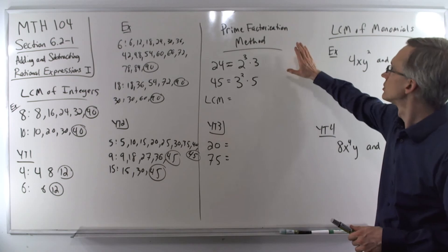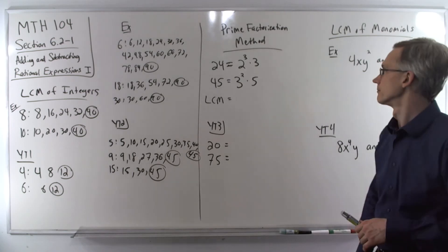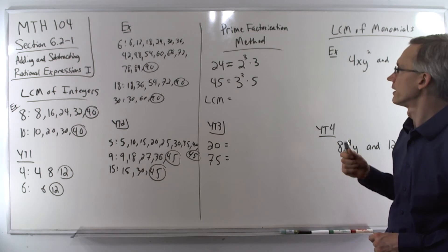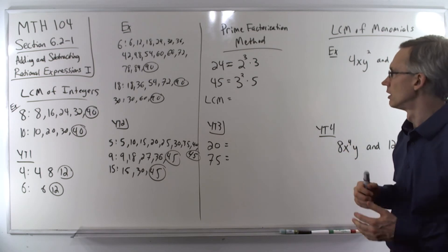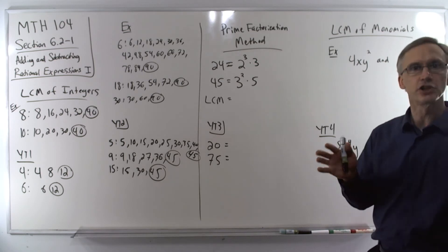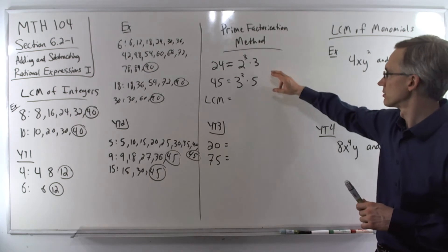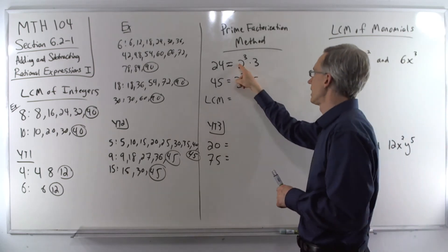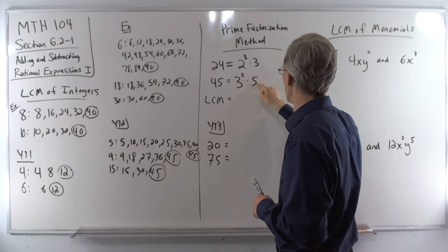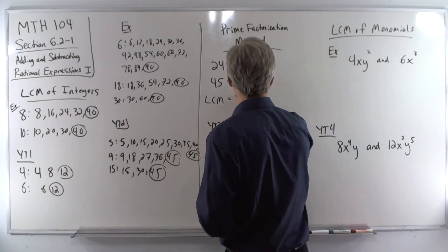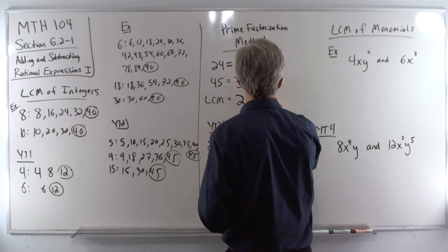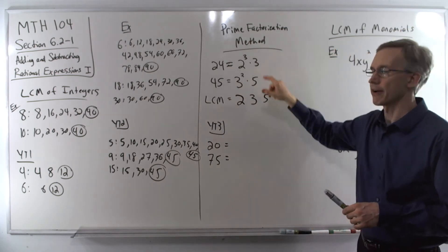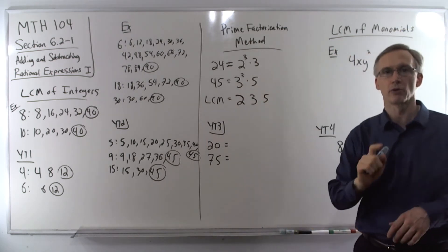But for larger numbers, we should use the prime factorization method. What we're going to do is for each number, find the prime factorization. Then we're going to list each unique base that appears in either one of these lists. Here we have 2 as a base, 3 as a base, and 5. Make sure you list every base that you see — it only has to appear in one of them.